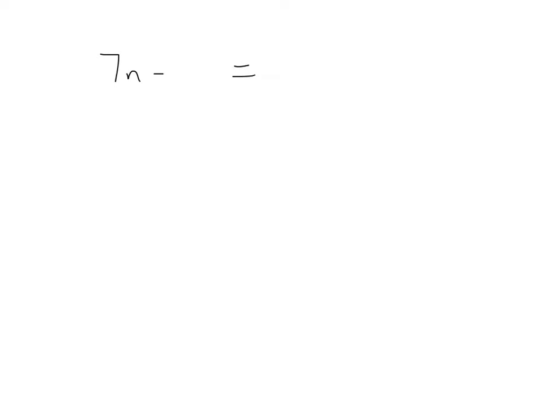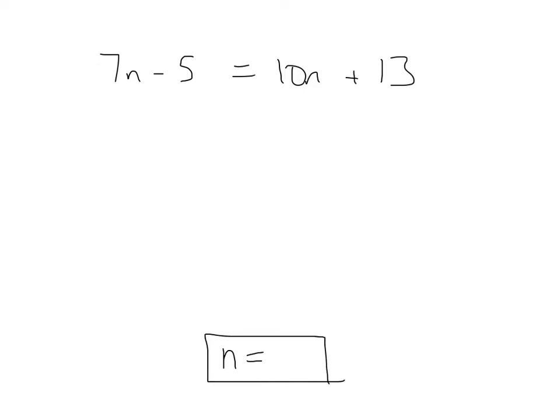Both sides of what? Well, both sides of the equal sign. So let's just do this first one: 7n minus 5 equals 10n plus 13. The goal of solving equations is always to get the variable by itself equal to some number. Our variable here is n, so I want this to end up looking like n equals some number. The issue we have today is that we have variables on both sides.